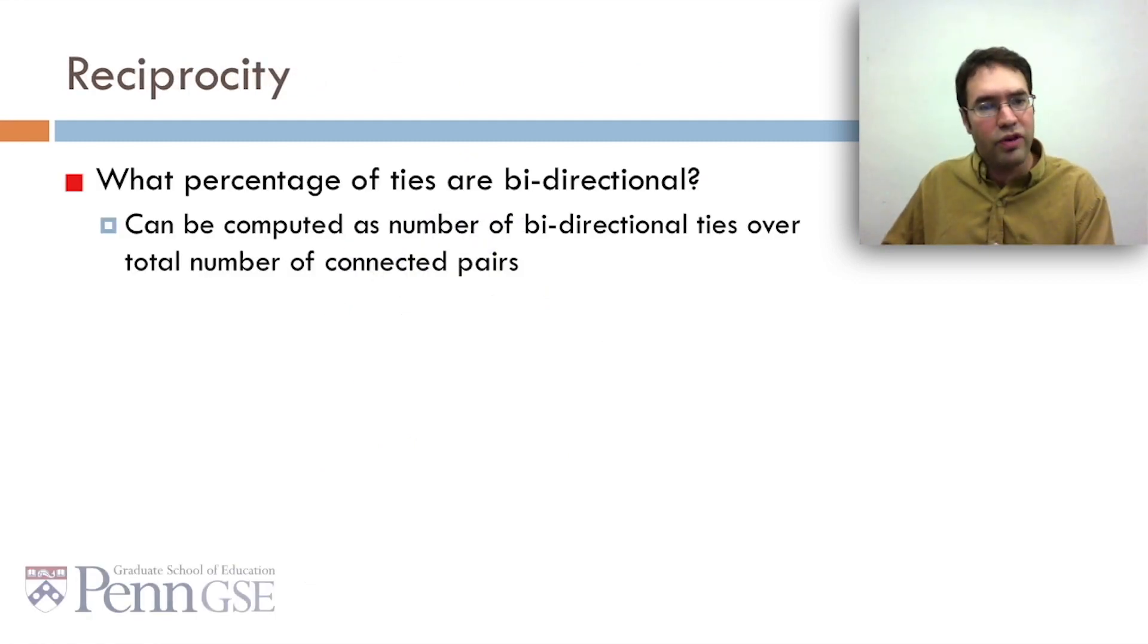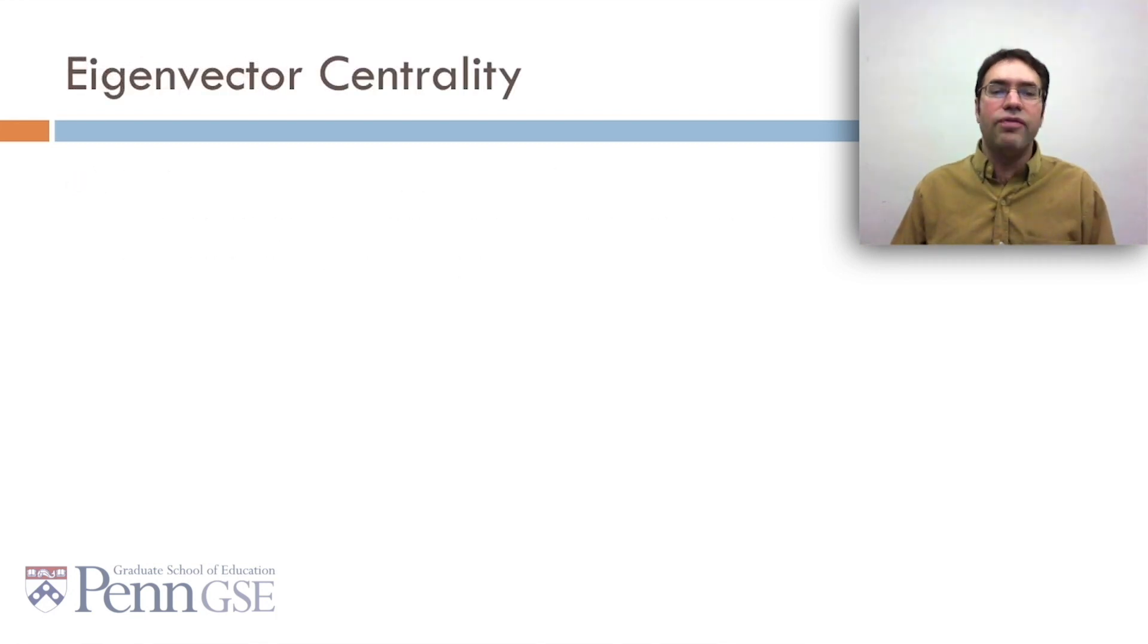A fourth type of centrality is reciprocity. What percentage of ties are bidirectional? And this can be computed as the number of bidirectional ties over the total number of connected pairs.